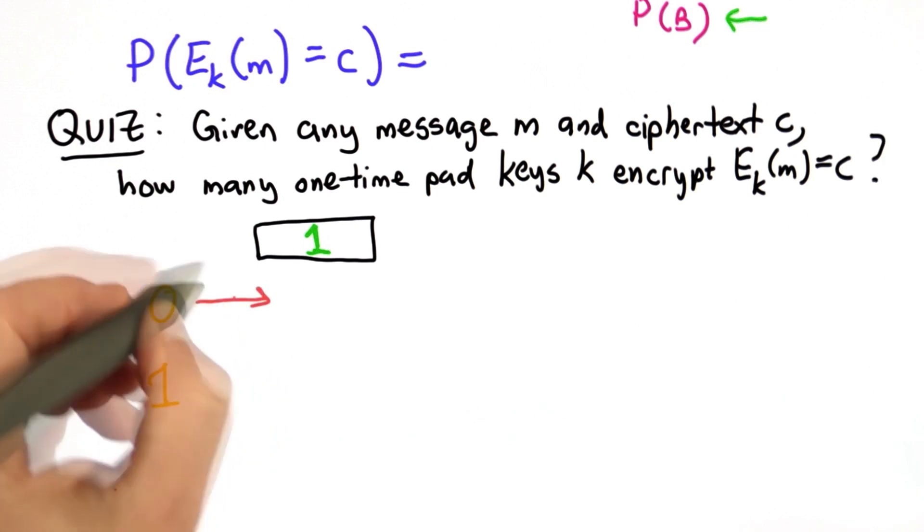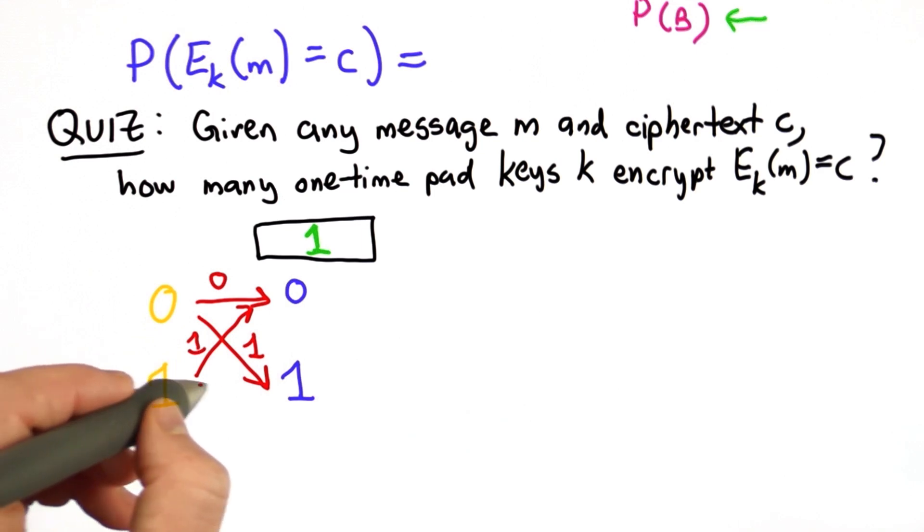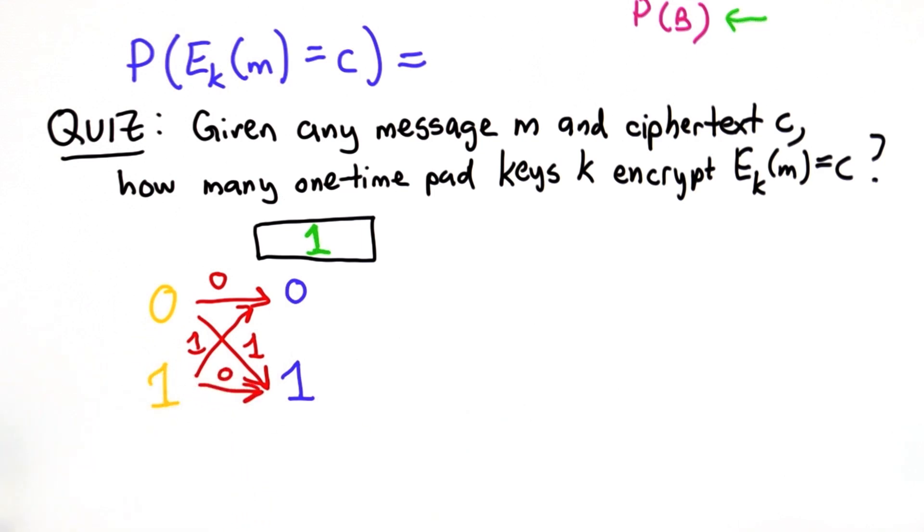Well then, the key 0 will map 0 to 0, the key 1 will map 1 to 0, and the key 0 will map 1 to 1.